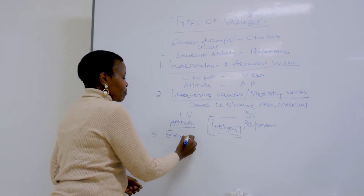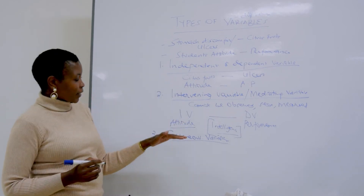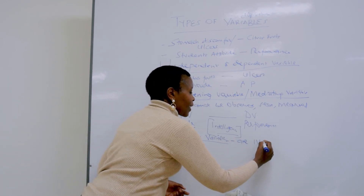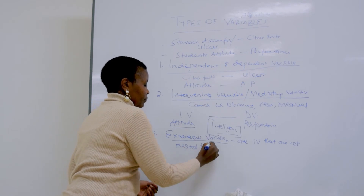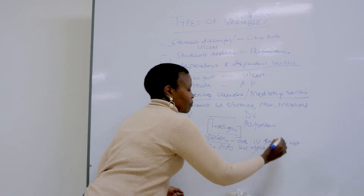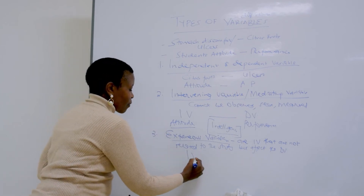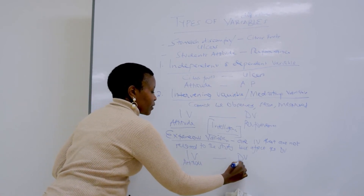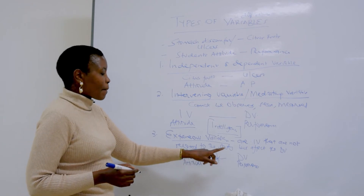The third type is extraneous variables. Extraneous variables are independent variables that are not related to the study, but affect the dependent variable. So these are not related to the study, but they affect the dependent variable. Again, we have our IV and DV — attitude and academic performance — and an extraneous variable comes in. It is not related to the study, but it affects the dependent variable.